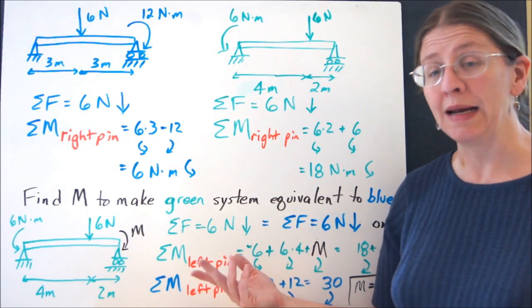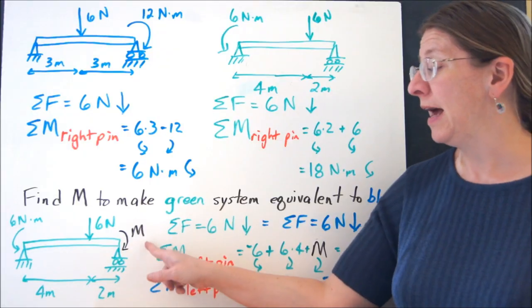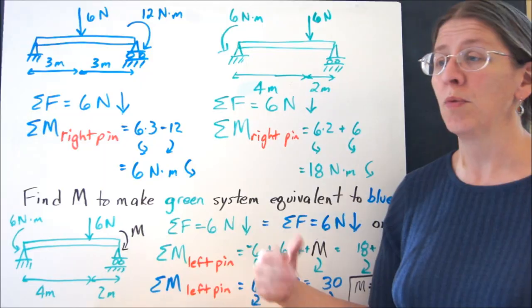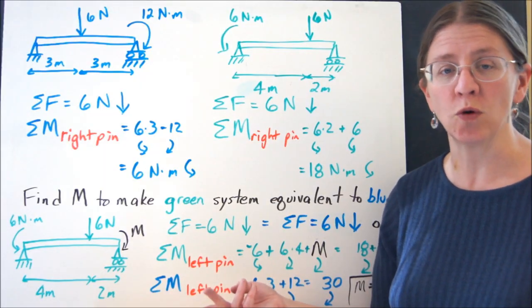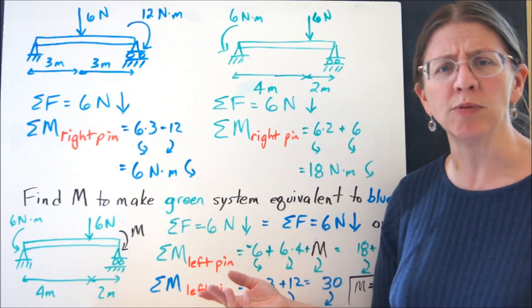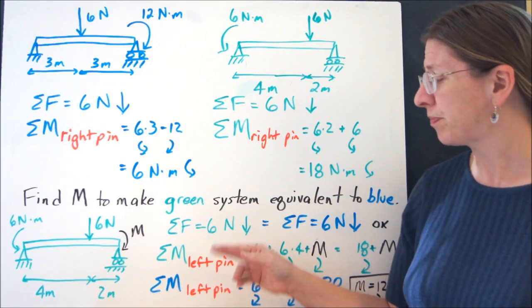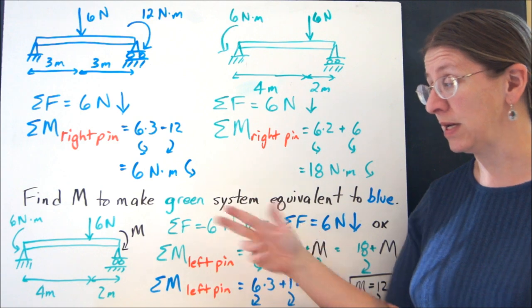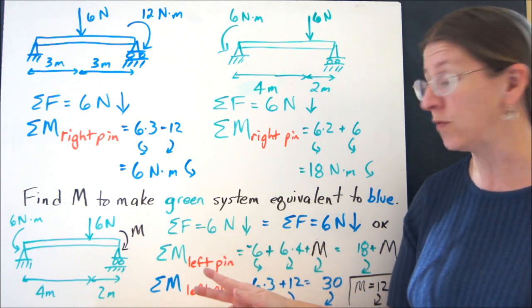So a problem might ask you to find an additional moment M to make these two systems the same. Or perhaps I want to find entirely what the forces and moments are. That's the kind of problem you end up with equivalent systems. Just check: the sum of the forces here is the same in both cases because I added a moment and not another force.